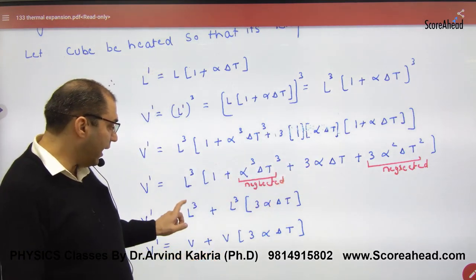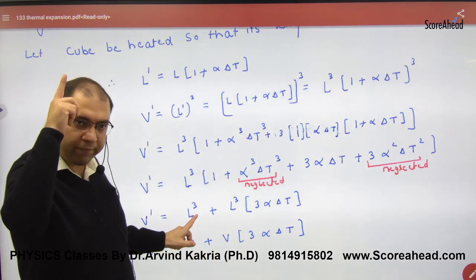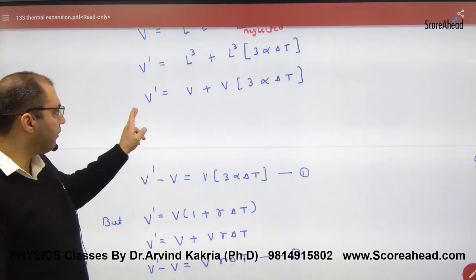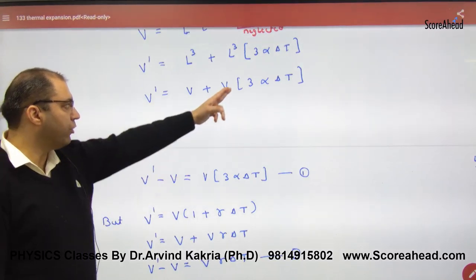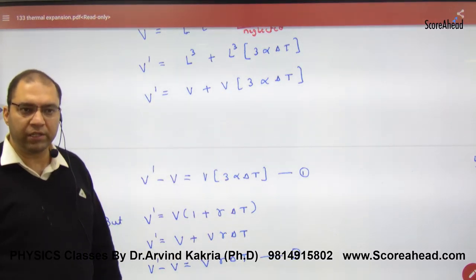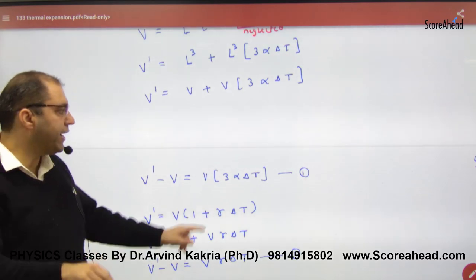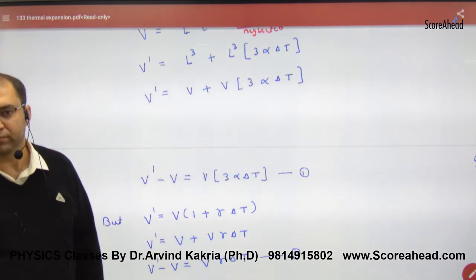So what do you have? L cube into 1, L cube. L cube into this term. This term is saved. L cube, your old volume was V. So L cube's old volume is V. So here, V dash minus V value came. So what did I do? Change in volume. The answer I have removed in terms of alpha.